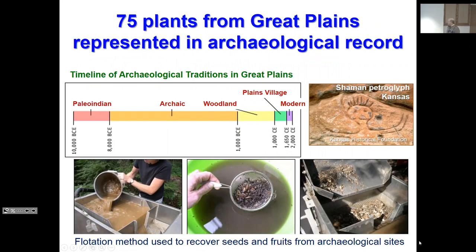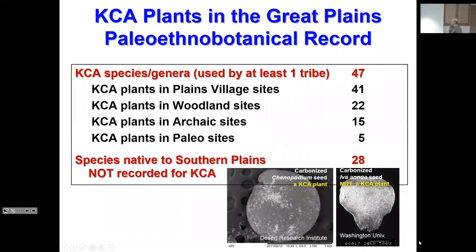If we look at the archaeological record — a lot of these records come from the flotation method and many are charcoalified — you have 75 plants from the Great Plains in the archaeological record. The record is generally divided into the Paleo-Indian period (basically 10,000 years and older), the Archaic period to about 1,000 BCE, Woodland, and then the Plains Village merging into the modern. Looking at KCA species in the archaeological record — most of this data are by genus only, it's very difficult to identify charcoalified material to species — 47 appear in the record. Going back in time through Plains Village, Woodland, Archaic, Paleo, you can see the numbers drop off.